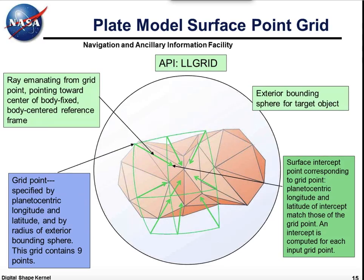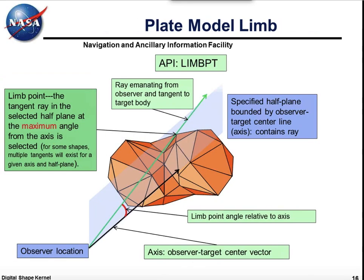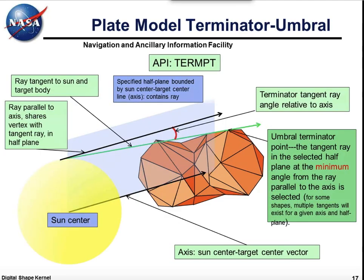There's a routine for finding a grid of points — it's simply a convenience routine that makes use of the surface intercept capability. Limb determination is one where it's not clear whether we're going to include it or not; it depends partly on the level of user interest. But there is the possibility of having a routine that will generate limb points on a complex shape. Similarly, there's a terminator model, showing examples of both umbral and penumbral terminator points.